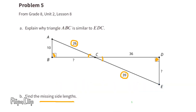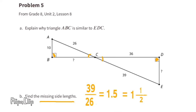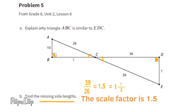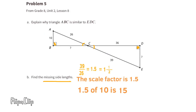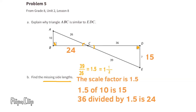Part B: Find the missing side lengths. Using the corresponding side lengths 39 and 26: 39 ÷ 26 = 1.5, so the scale factor is 1.5. Length CD is 1.5 times longer than BC, and length DE is 1.5 times longer than AB. 1.5 × 10 = 15, so side DE measures 15 units. 36 ÷ 1.5 = 24, so side BC measures 24 units.